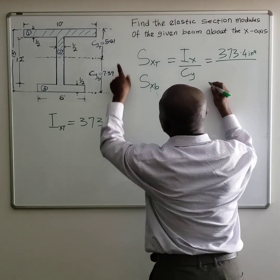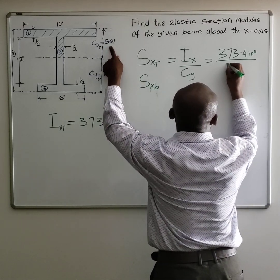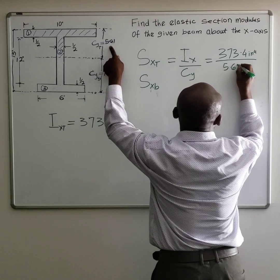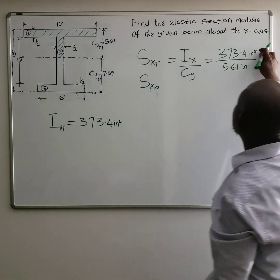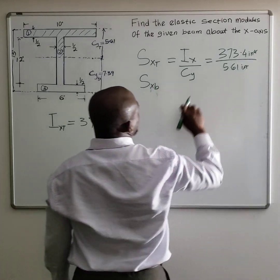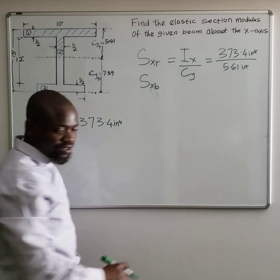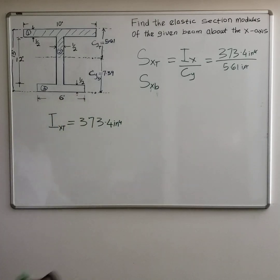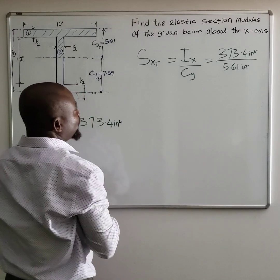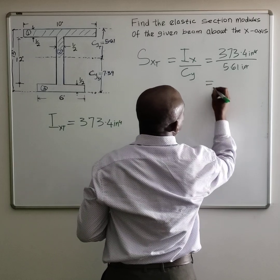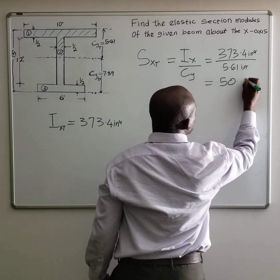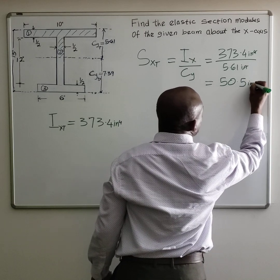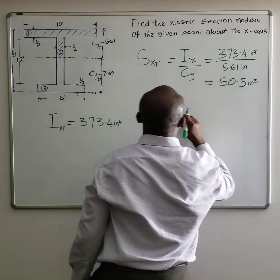373.4 inches to the fourth power. It's always a good idea to carry a unit along. And then from the top is 5.61 inches. You realize that this inch cancels out and another inch here, you are left with inches to the third power. So if you do that math, you are going to have 50.5 inches to the third. So that's your elastic section modulus from the extreme fiber on the top to the centroid.